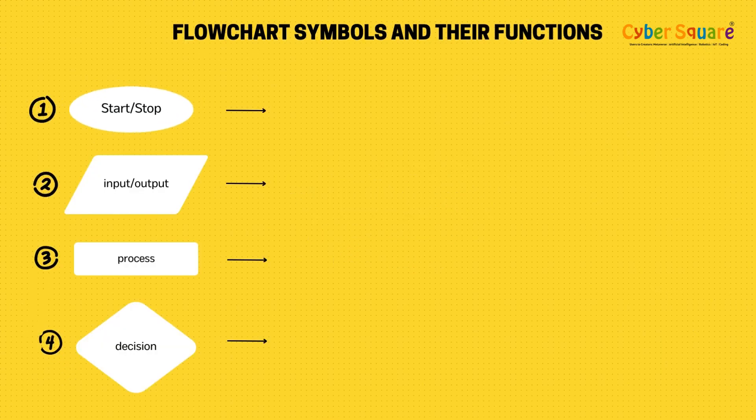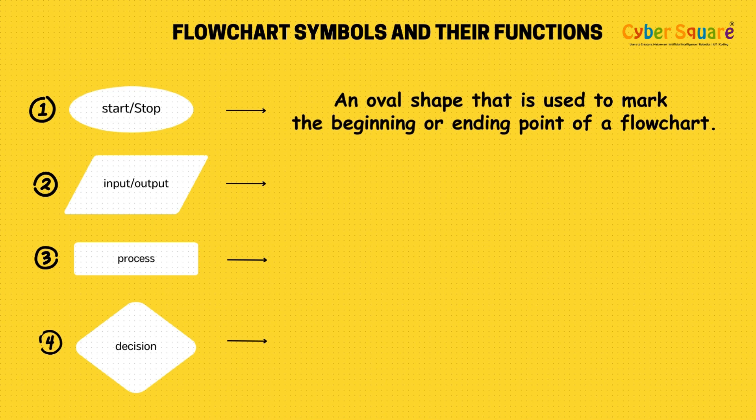Start and stop symbol: this is an oval shape that is used to mark the beginning or ending point of a flowchart.